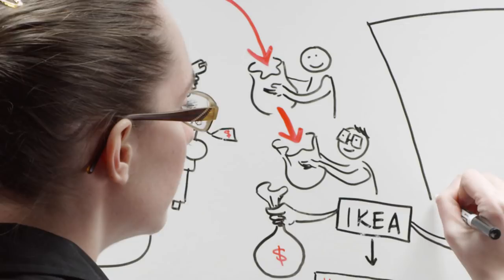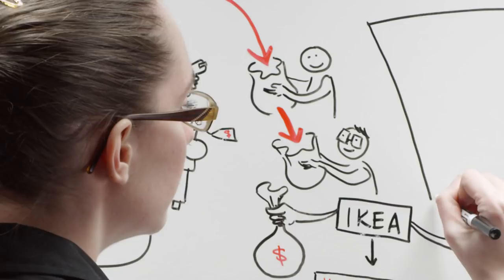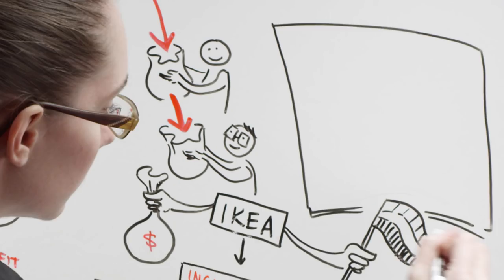According to The Economist, the overall setup of IKEA minimizes tax and disclosure, handsomely rewards the founding Kamprad family, and makes IKEA immune to a takeover.